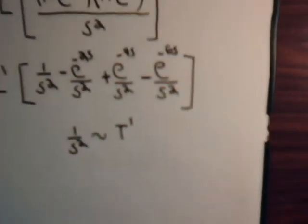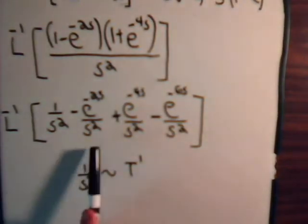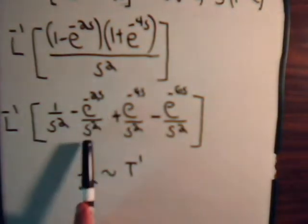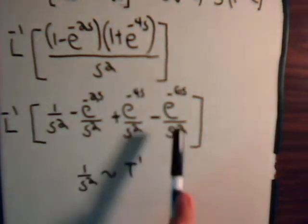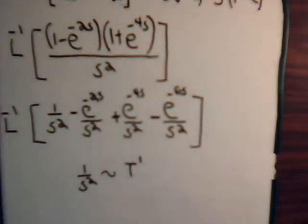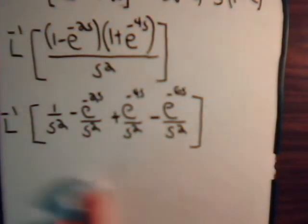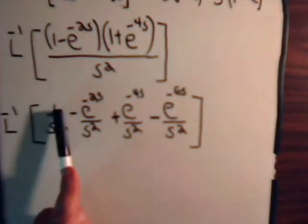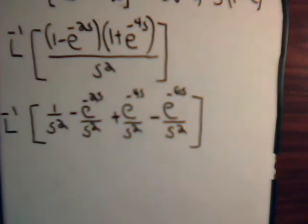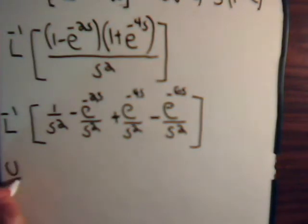So in each case 1 over s squared appears — this times 1 over s squared, this times 1 over s squared, this times 1 over s squared — this should be a pretty basic problem. Let's see what we get from it. The first term is just going to be t.